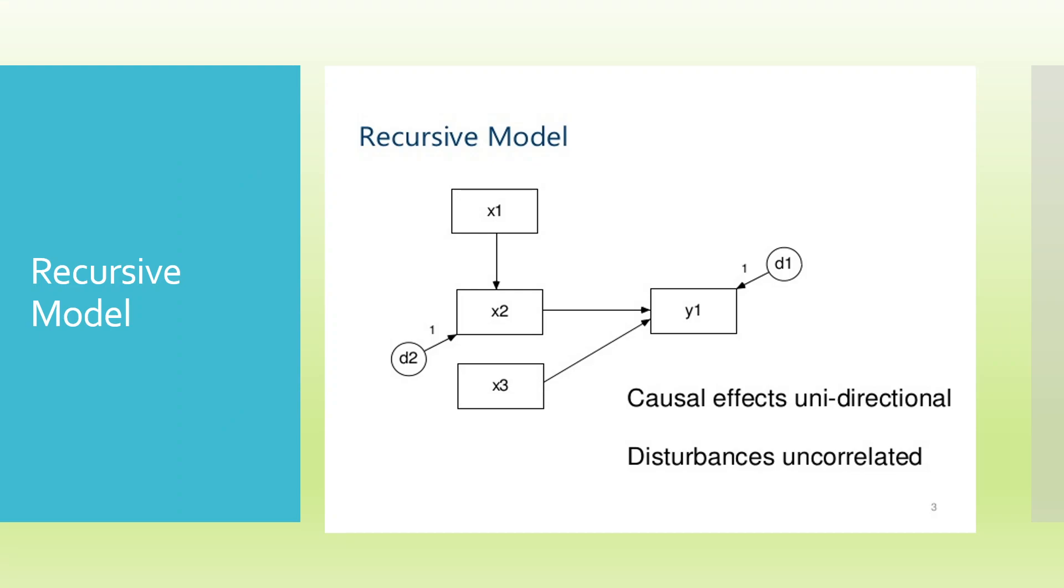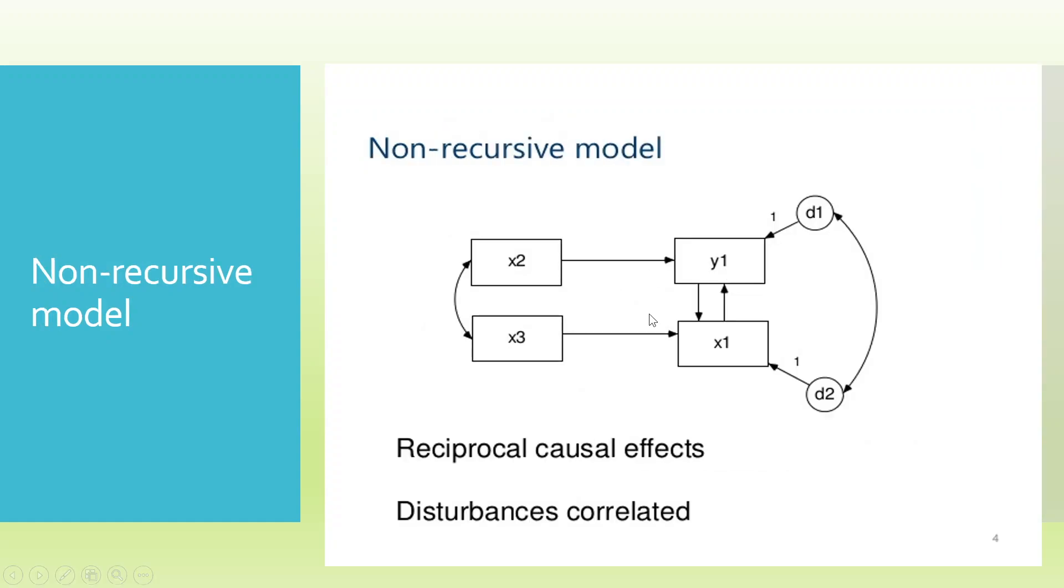Smart PLS only works on recursive models. It does not work on non-recursive models. It means that if there is a loop or a feedback mechanism—you can see here that the arrows are going, then there is again a loop and arrows are again entering—if there is a loop-like structure in your model, Smart PLS will not work.